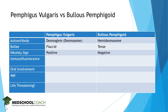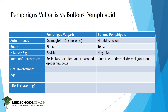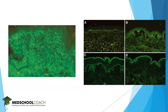In terms of immunofluorescence, in pemphigus vulgaris you're going to see a reticular or net-like pattern around the cells, since the desmosomes surround the cells and are not on the basal surface. This contrasts with the linear distribution in bullous pemphigoid. Here are pictures — reticular on the left for pemphigus vulgaris, and linear on the right for bullous pemphigoid.